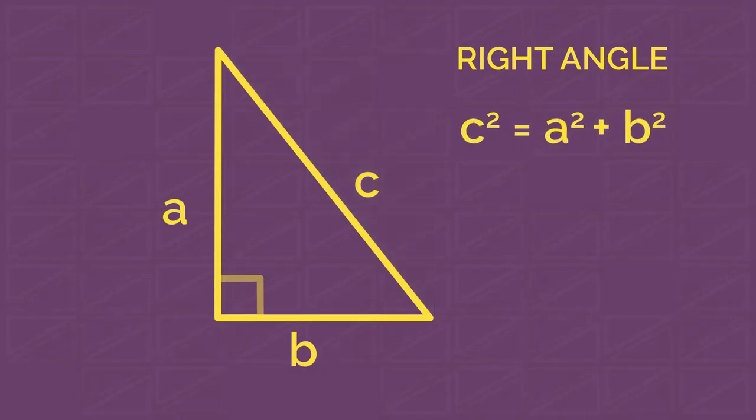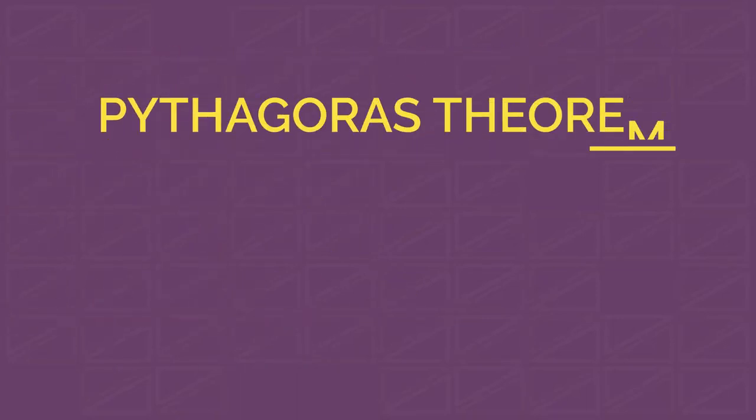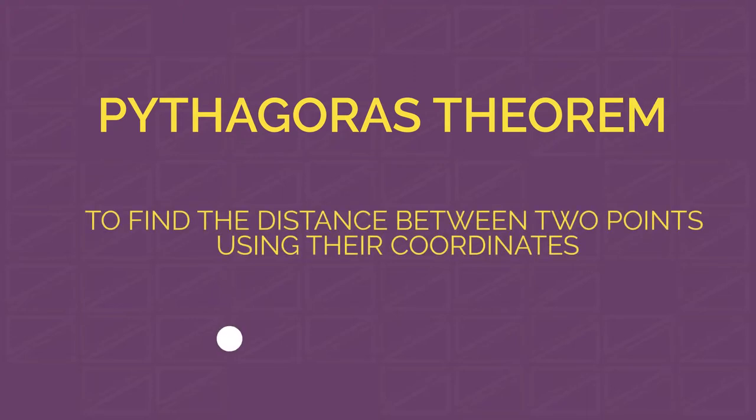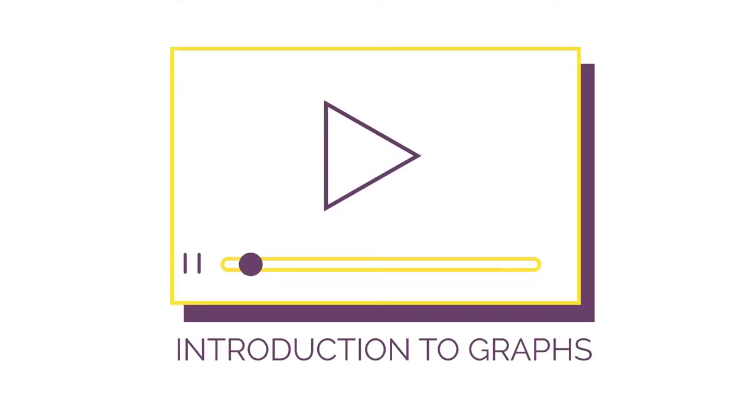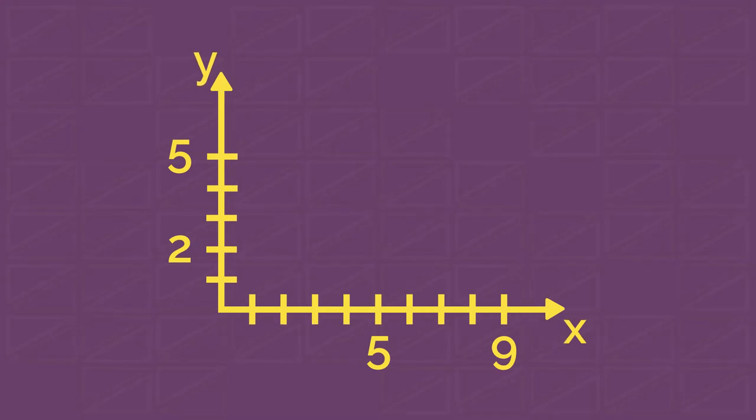But what's it used for? One useful thing you can use Pythagoras theorem for is to find the distance between two points using their coordinates. If you don't know how to work with coordinate planes, watch this video. But if you know what it is, let's try to find the distance between two arbitrary points.